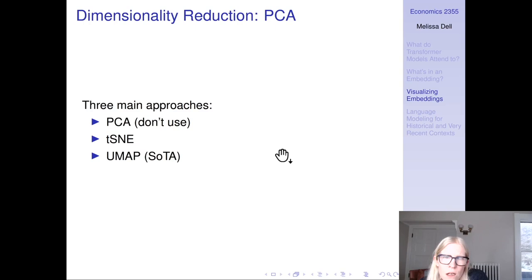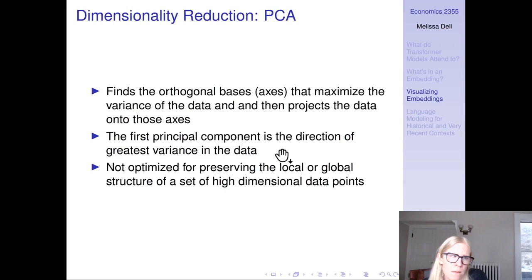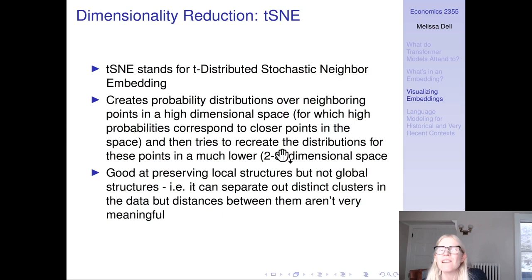If we're doing dimensionality reduction, there are three main approaches: PCA, T-SNE, and UMAP. Don't use PCA — nobody uses that to visualize these embeddings, it's not the right tool for the job. What PCA does is define orthogonal axes that maximize variance and then projects data onto those axes. It's not optimized for preserving the local or global structure of high-dimensional data points, so you really don't want to use it in this context, even though we see it used a lot in economics.